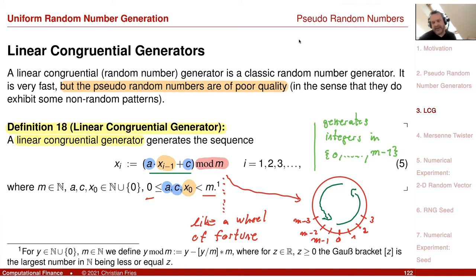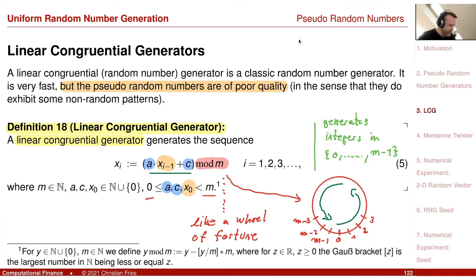The wheel is always turned a little bit by the constant C, to ensure you always get to some other position. It is an art to choose the right coefficients A, C, and M. This generator generates integer numbers between zero and M minus one.